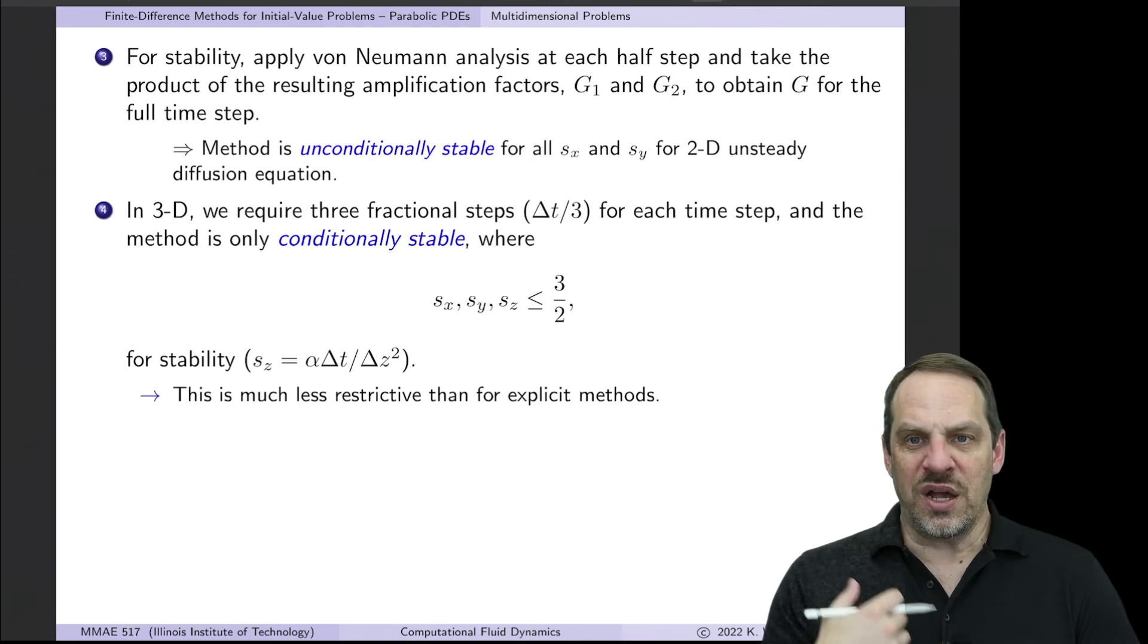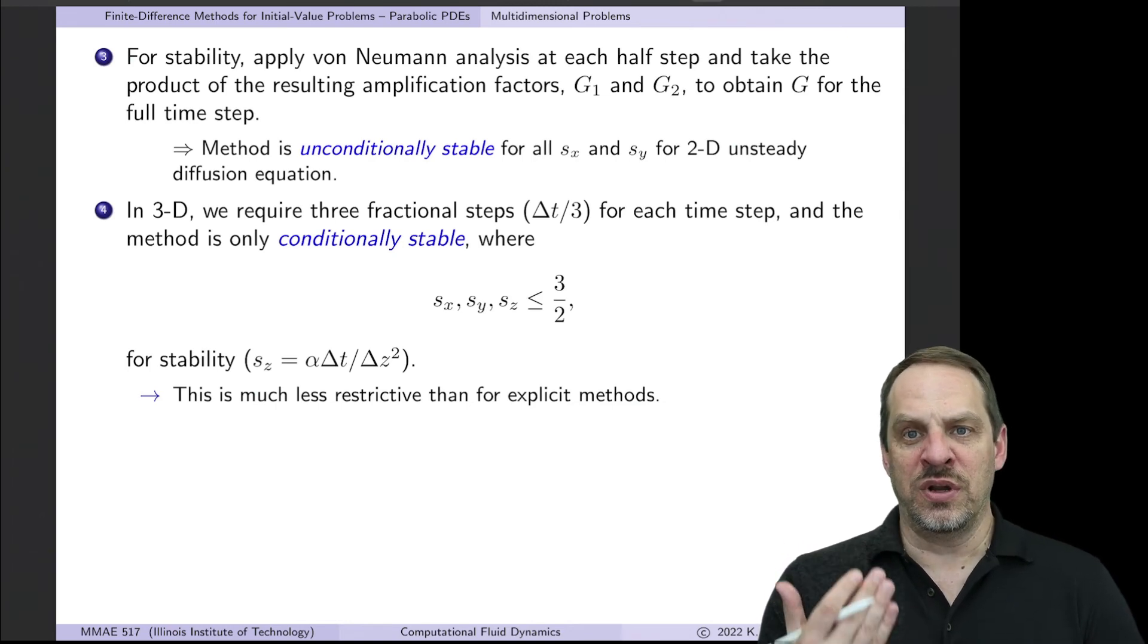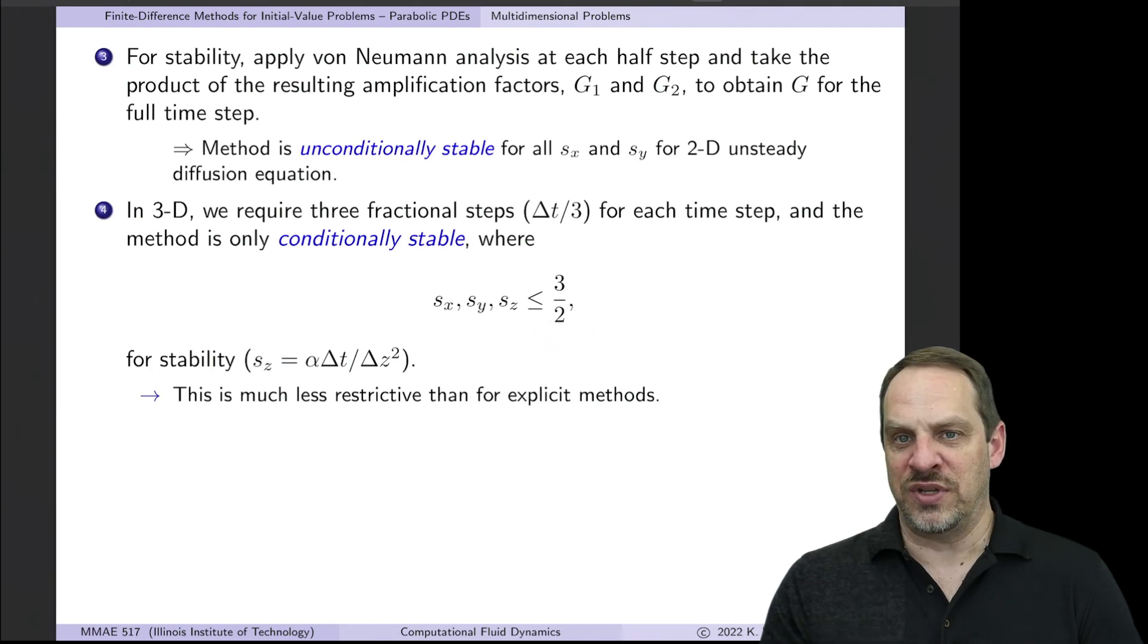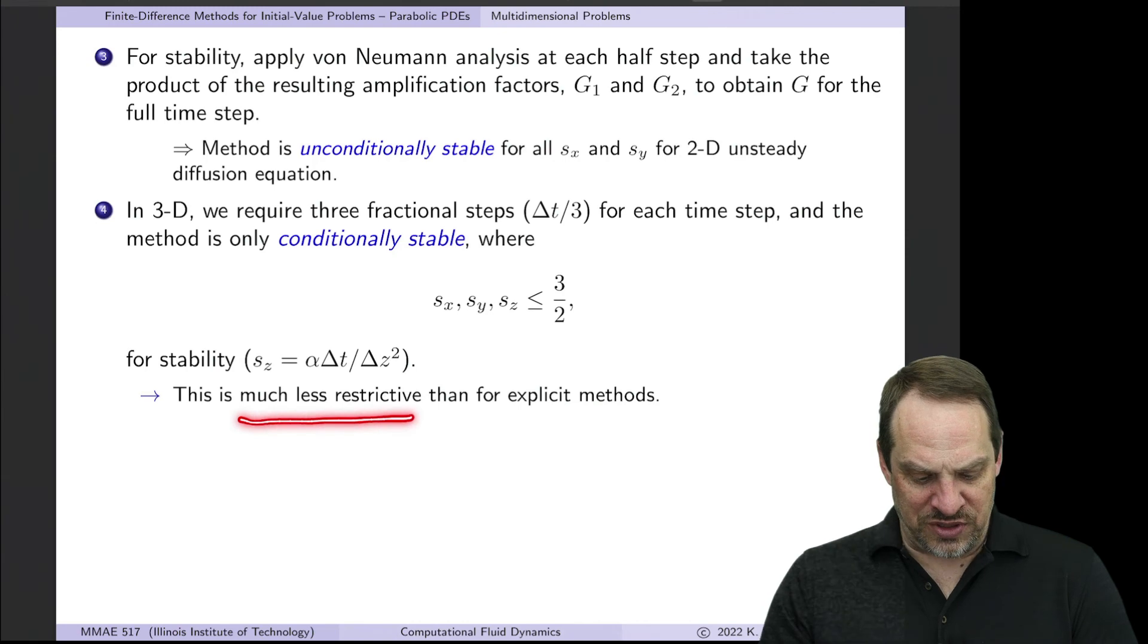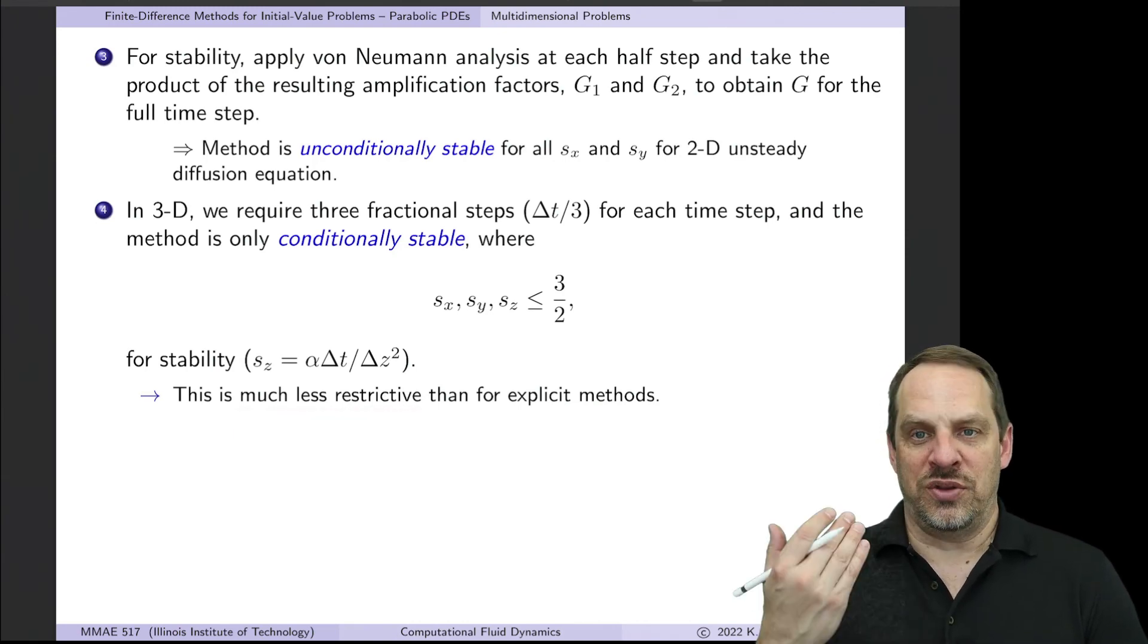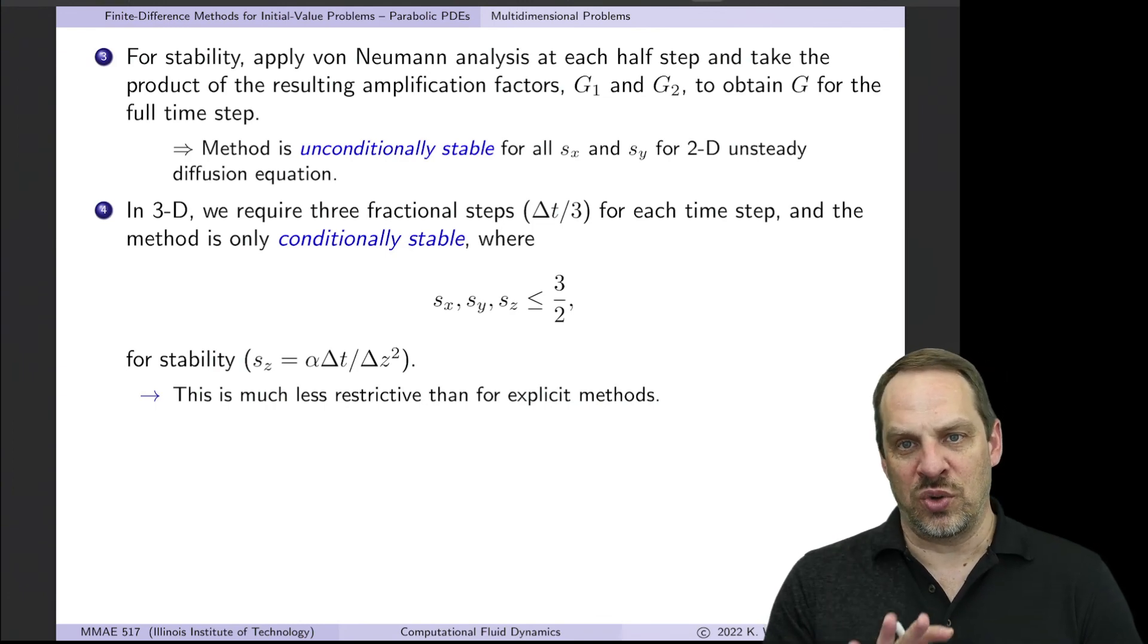Now when you go to 3D, however, it's only conditionally stable. All three of the s's have to be less than or equal to three halves. Not the sum, but all three of them. Now that's nowhere near as restrictive as the explicit method. But it's still a restriction on the time step that in the 3D case we'd have to be aware of and take that into account. So that's not ideal, but it's okay.